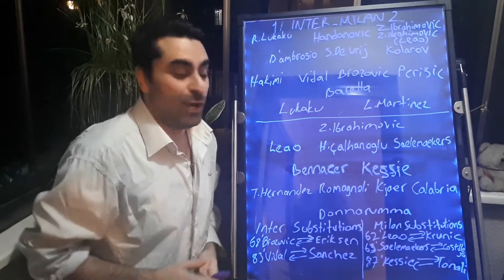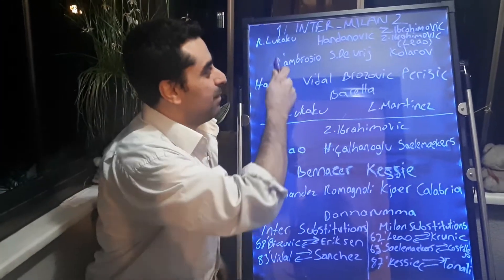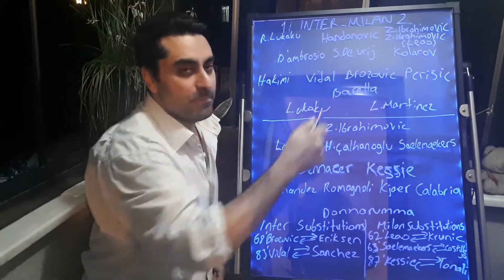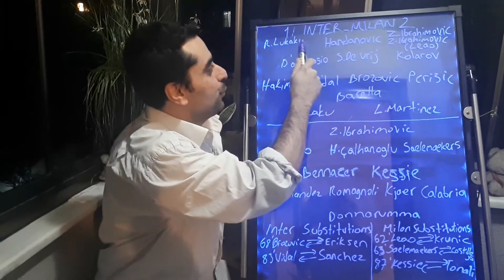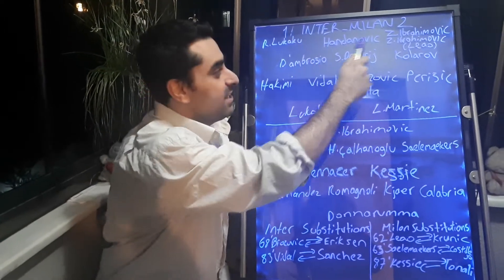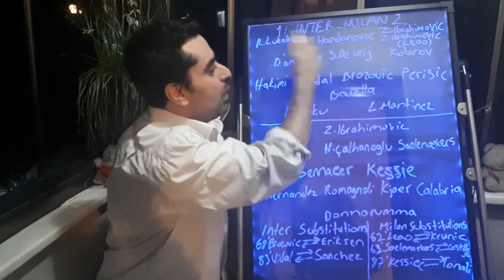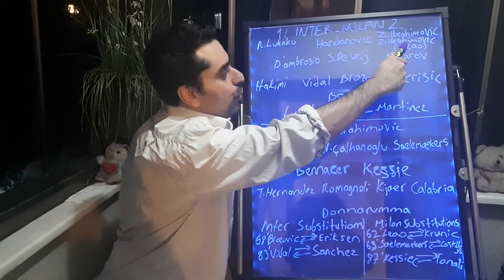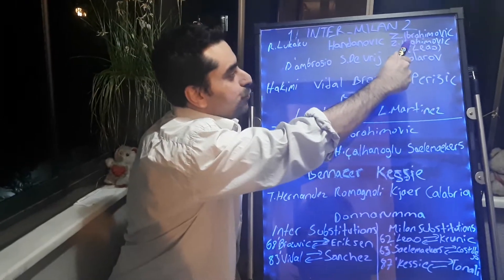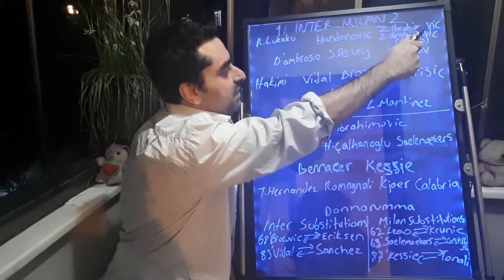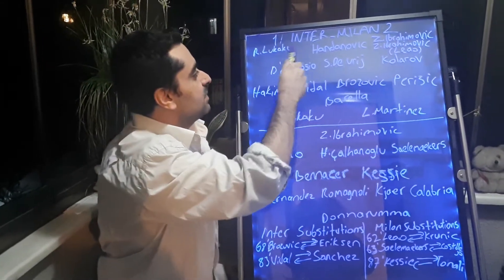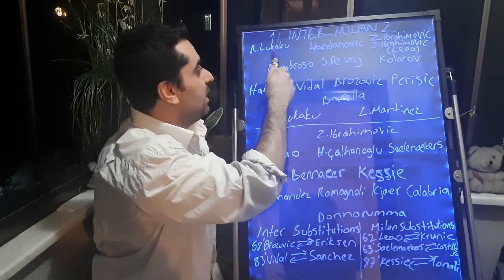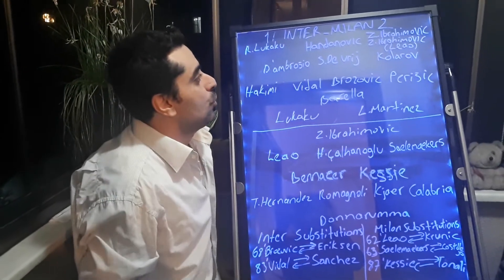Hello my friends. I want to talk about the Inter-Milan game. Milan won against Inter 2-1. Zlatan Ibrahimovic scored two goals, one of them from the penalty spot. And Inter's goal was scored by Romelu Lukaku.